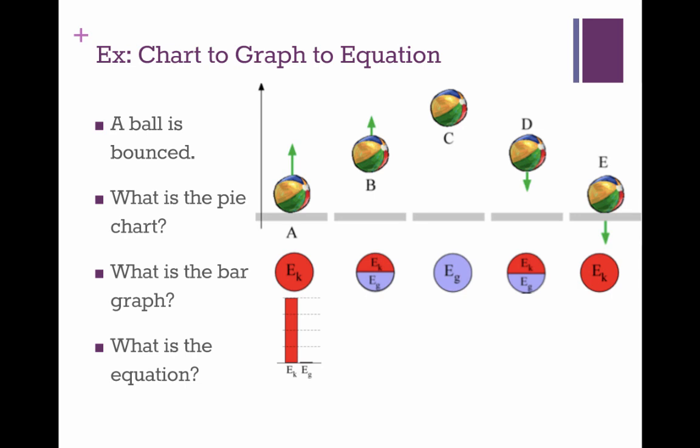The bar graphs are similar, 4 Ek for A, 2 and 2 for B, all Eg for C, 2 and 2 for D, and all Ek again for position E.